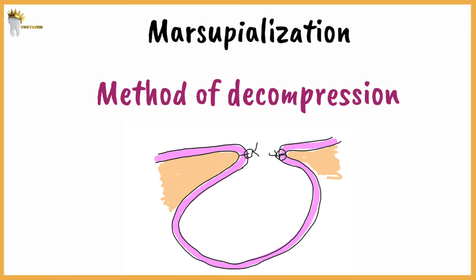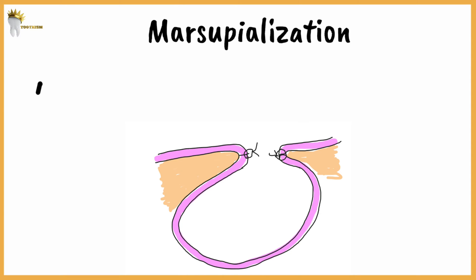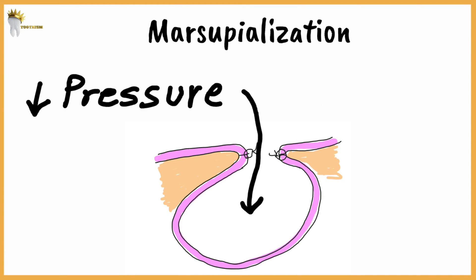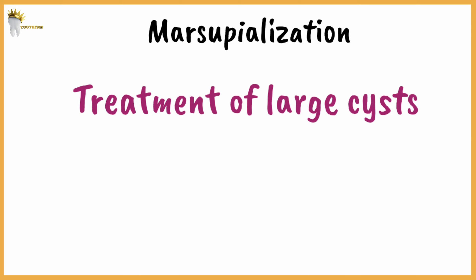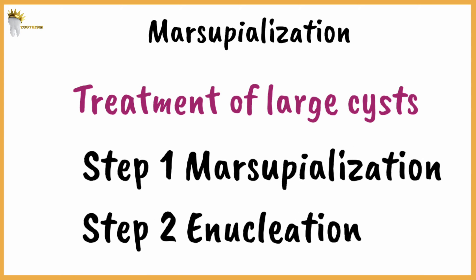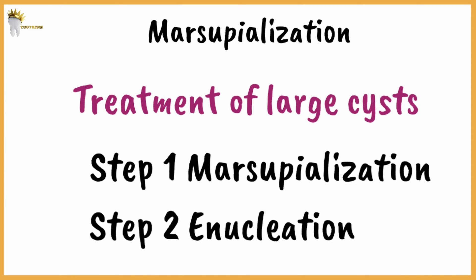Marsupialization is just one method of decompression. What it does is decrease intracystic pressure, promote shrinkage of the cyst, and encourage bone fill. This is usually done for the treatment of large cysts. It can be used as the only treatment option or as a preliminary step — marsupialization first, then enucleation at a later date.